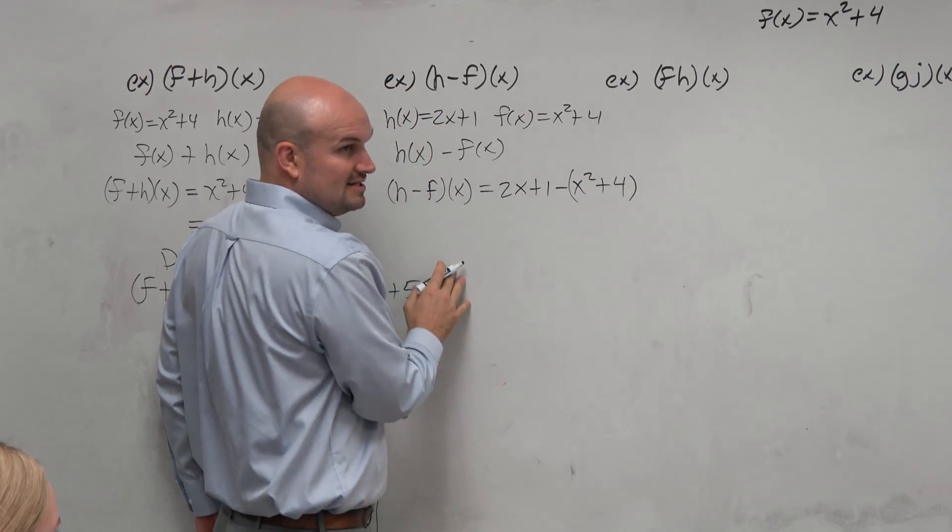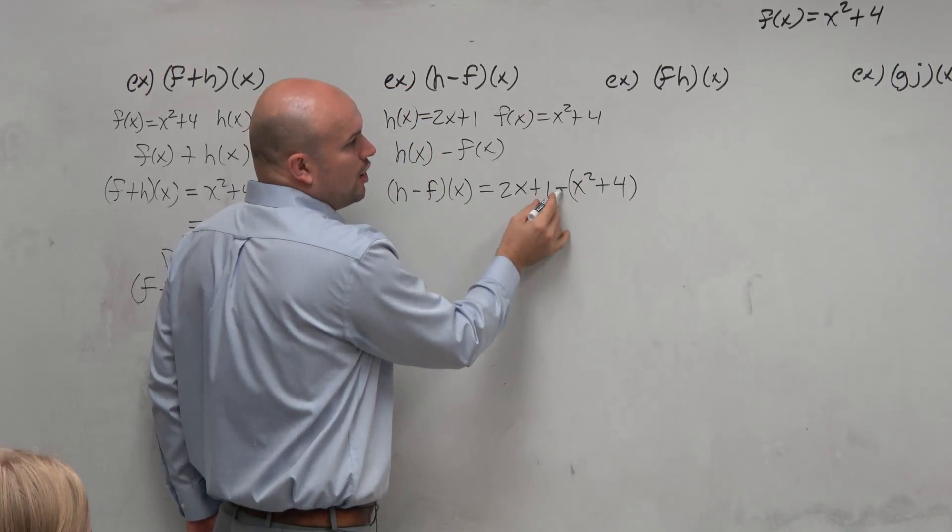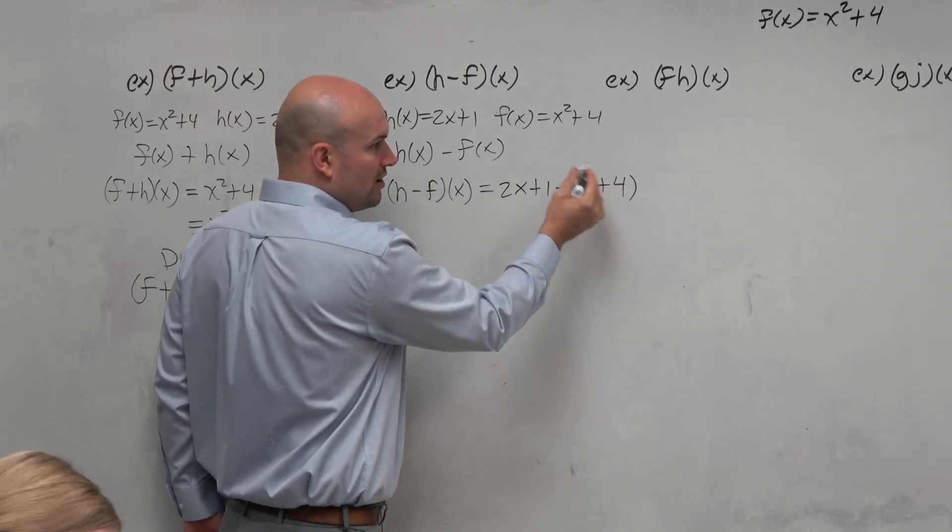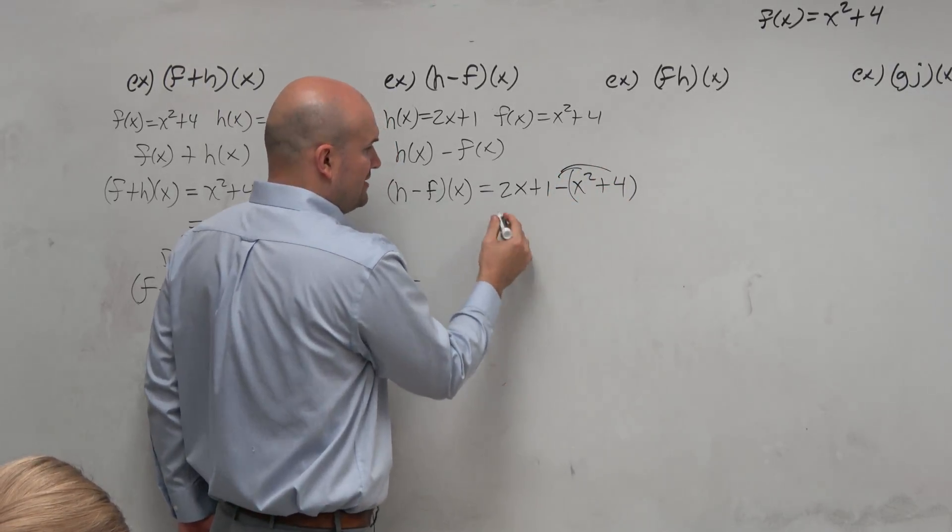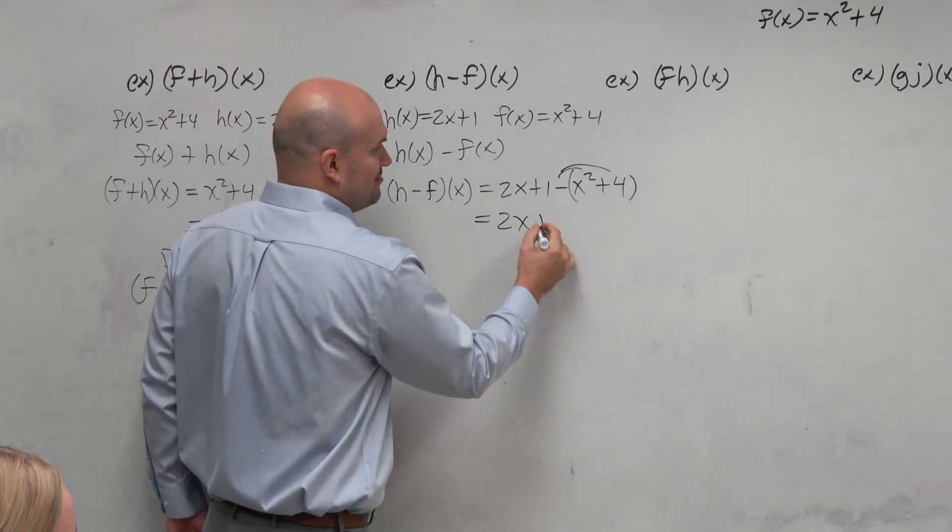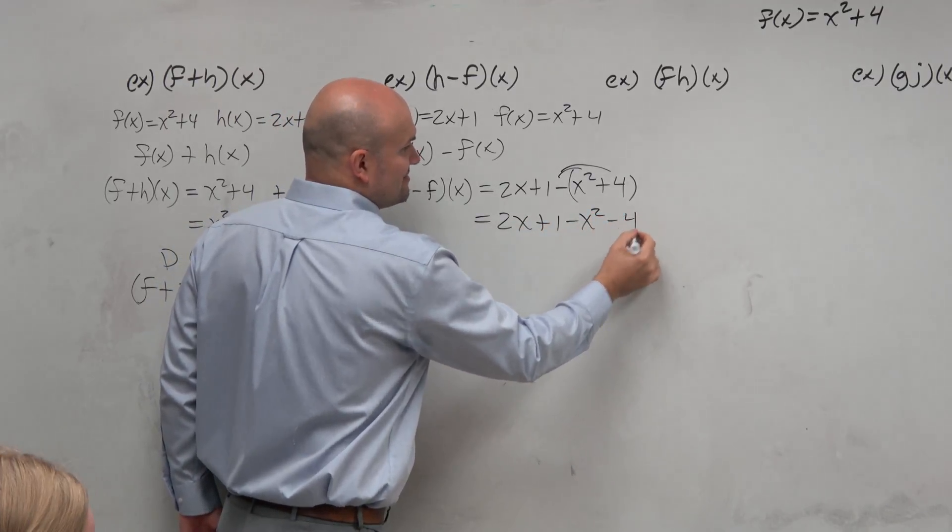So put it in parentheses. Then you can realize that you're subtracting x squared and you're subtracting a 4. Or you're really just applying the distributive property here. So it's 2x plus 1 minus x squared minus 4.